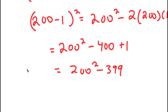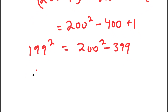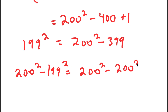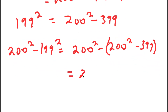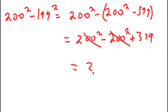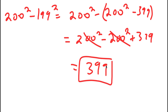So that is the value of 199 squared. Therefore, 200 squared minus 199 squared equals 200 squared minus (200 squared minus 399), which equals 200 squared minus 200 squared plus 399. Those two cancel out, leaving us with 399. That is my second method.